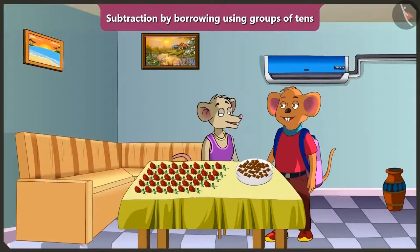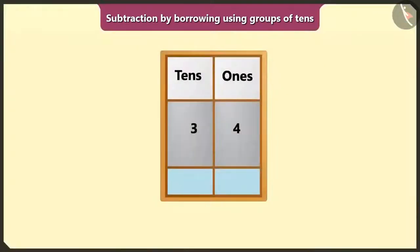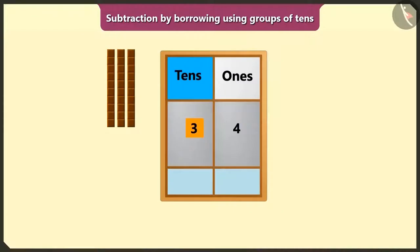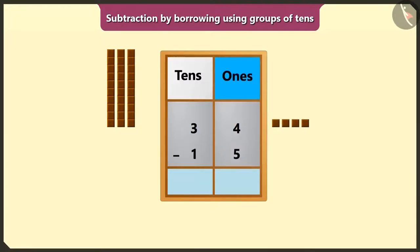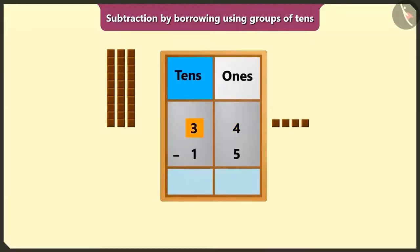Now if we eat 15 more chocolates out of the 34 chocolates, then how many chocolates would we have left? How many would be left if we subtract 15 from 34? 34 means 3 tens and 4 ones. 15 means 1 ten and 5 ones. We cannot subtract 5 from 4 in the box of ones. So we will borrow 1 ten from 3 tens from the box of tens.